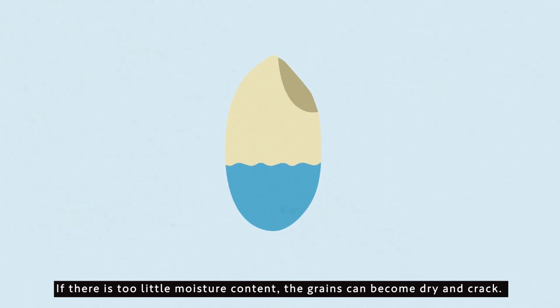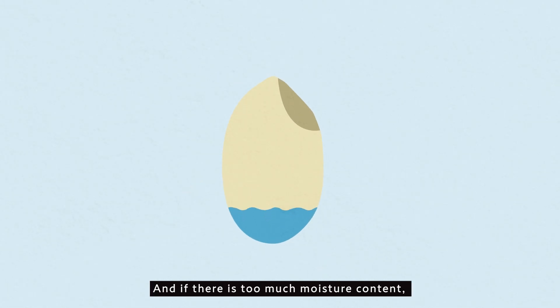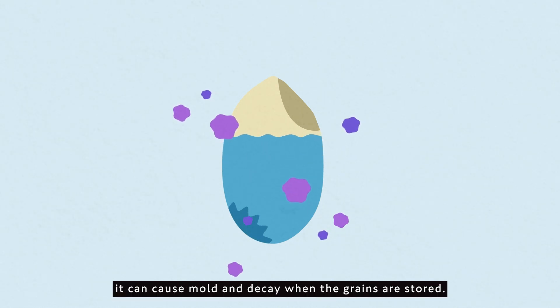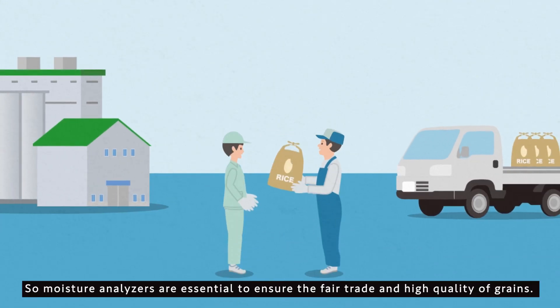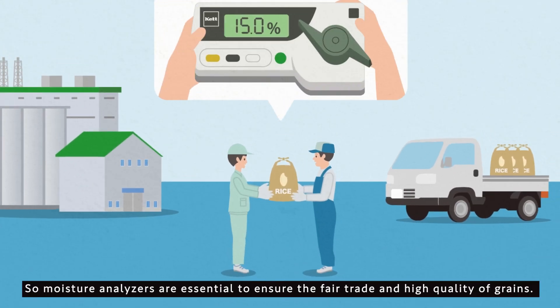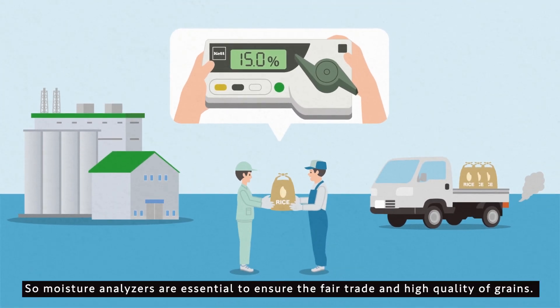If there is too little moisture content, the grains can become dry and crack. And if there is too much moisture content, it can cause mold and decay when the grains are stored. So moisture analyzers are essential to ensure their fair trade and high quality of grains.